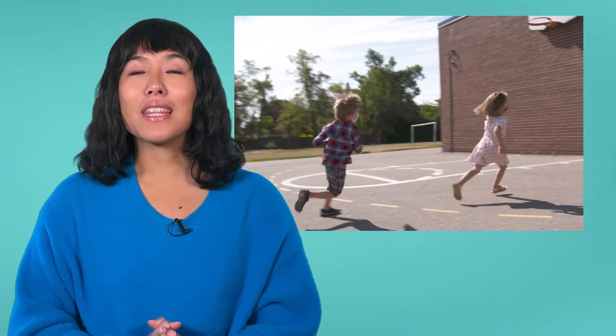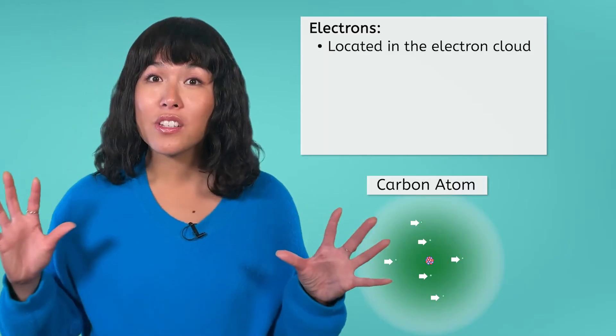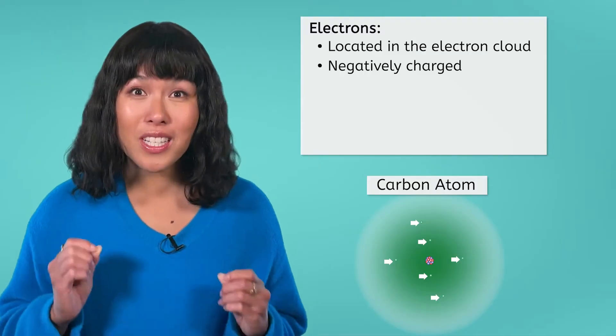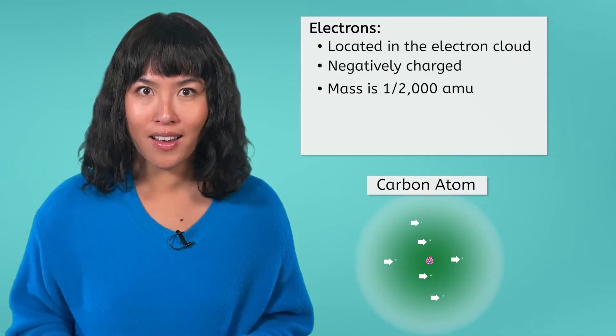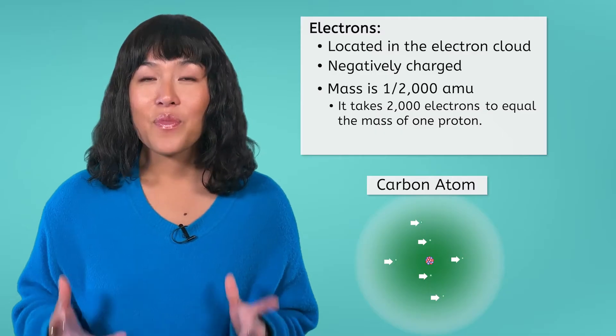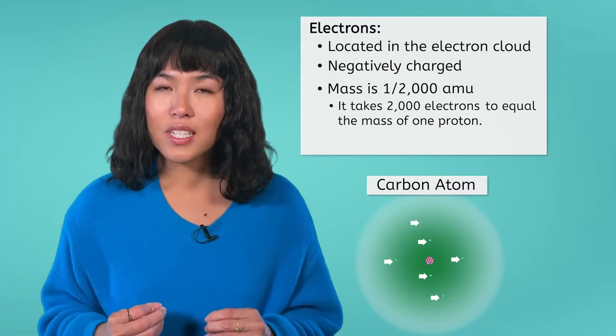Finally, we come to the tiny energetic electrons. These subatomic particles are like little kids who were given too much sugar — if you put them in a large open space, they will run around at top speed, taking up as much space as possible. Electrons with all of their energy are found in the electron cloud, which is a large region of mostly empty space surrounding the nucleus. Electrons are negatively charged and very small. In fact, they have an approximate mass that is one two-thousandth the mass of a proton, meaning it would take around 2,000 electrons to equal the mass of one proton or neutron. This mass is so small that scientists consider it negligible, meaning it isn't even taken into account in the mass of an atom.